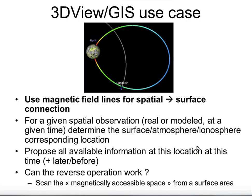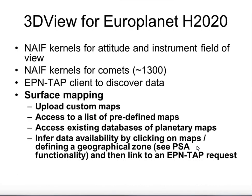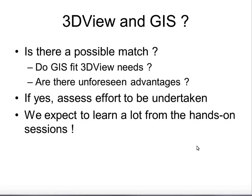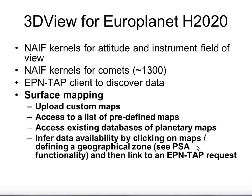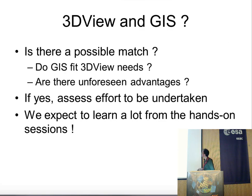The next steps for 3DVue are in the frame of Europlanet 2020, where different developments are planned. Some of them include surface mapping, access to a list of predefined maps, and access to existing databases for planetary maps. If we could integrate GIS into that, it would be very beneficial.